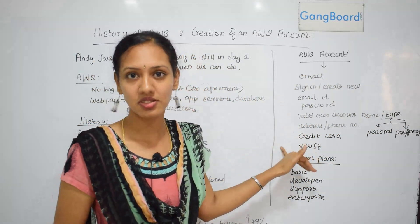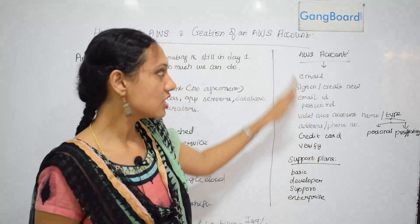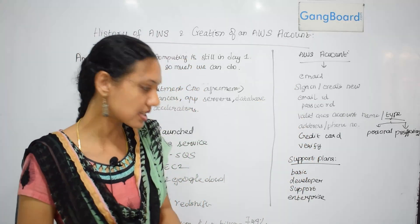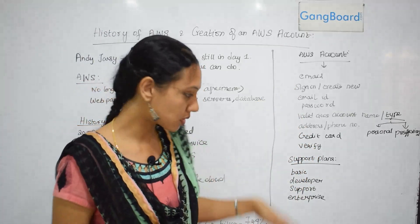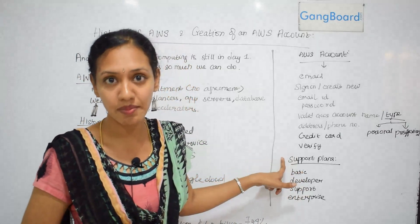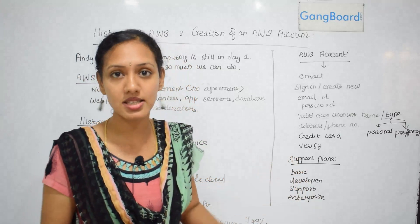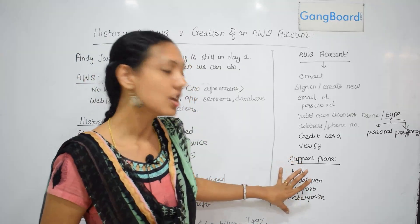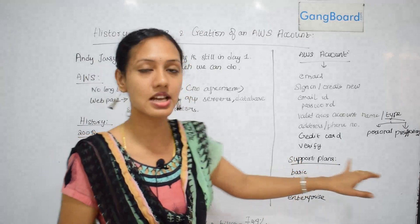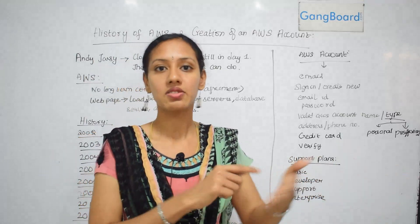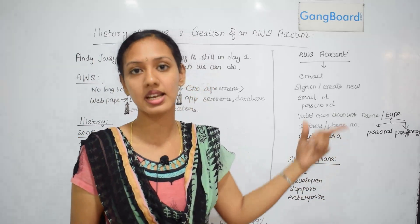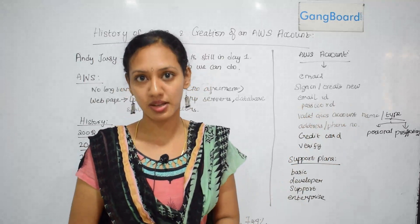Then you just enter the CAPTCHA code and verify. The last step will ask you to choose a support plan. There are four support plans: Basic, Developer, Business Support, and Enterprise. This is also a major exam question — 'What are the support plans available in AWS?' Click on Basic since we are doing this for practice. Click on Basic, hit Create, and it will land you on the AWS page. Once you sign in with your email and password, you are in AWS.